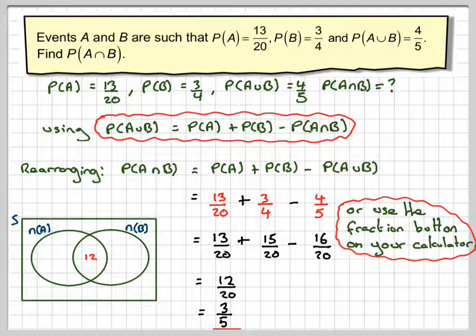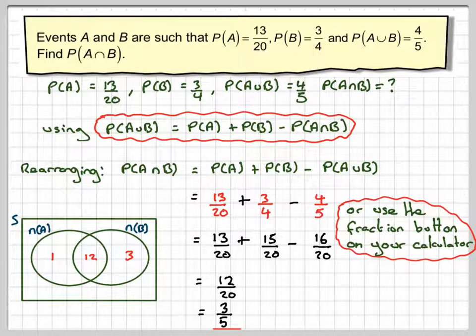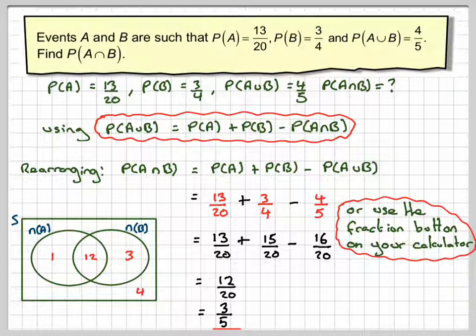So in A we have 13 altogether, so that means there will be 1 here, and there will be 3 here. So 1 plus 12 plus 3 will make the 16, which is what you get in A union B, and there will be 4 outside here that are not in A or B.